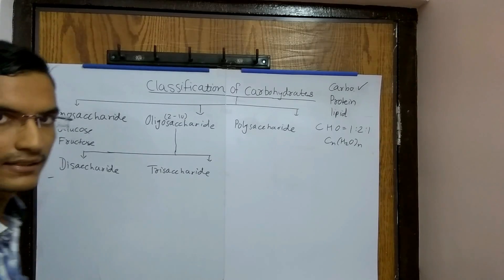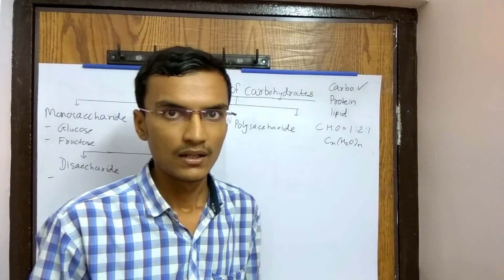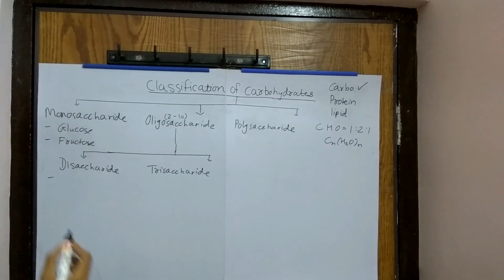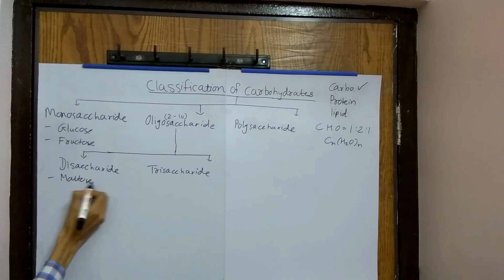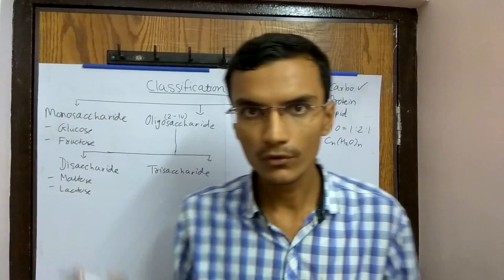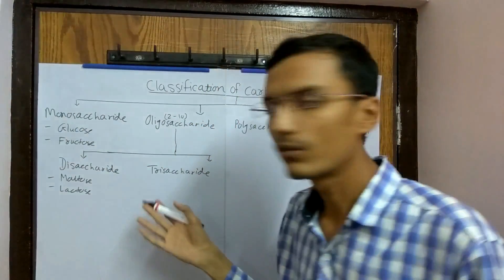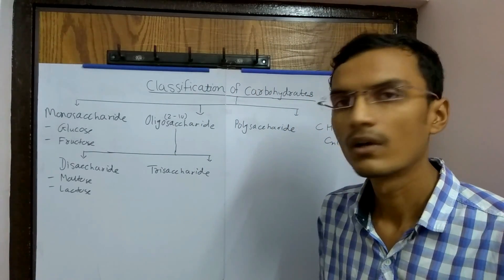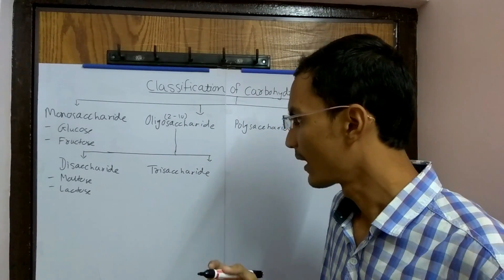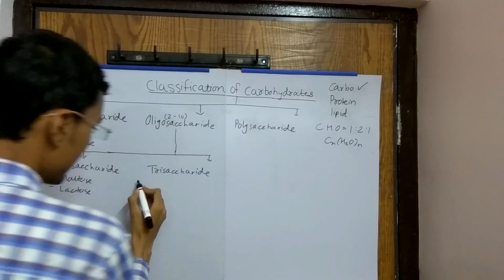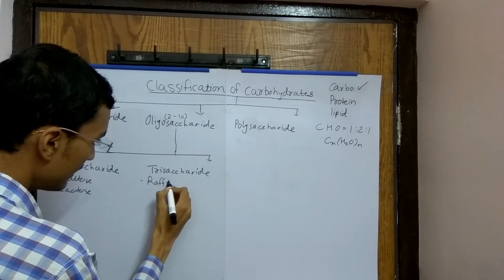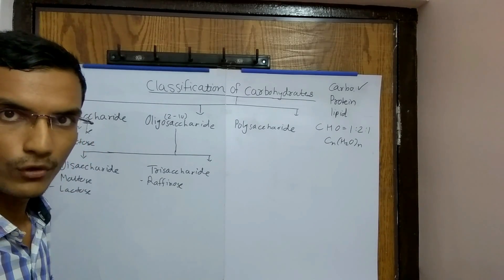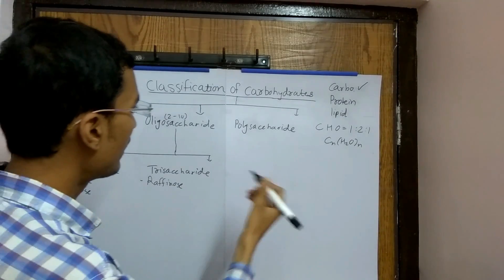Examples of disaccharides are maltose and lactose. Maltose is made up of 2 molecules of glucose, and lactose is made up of galactose and glucose. Trisaccharide — for example, raffinose — is an example of trisaccharide, as it contains 3 monomers of sugar.